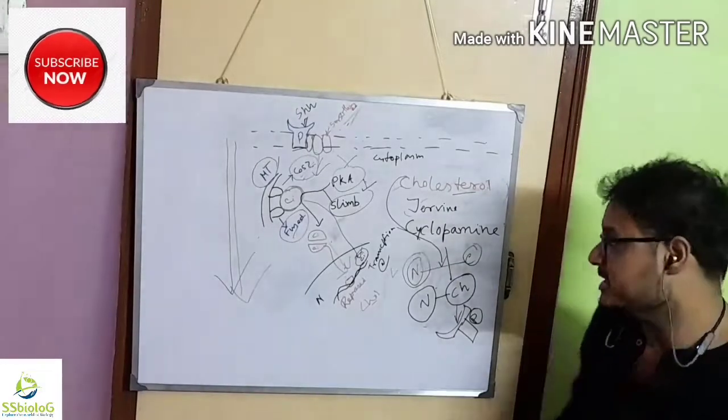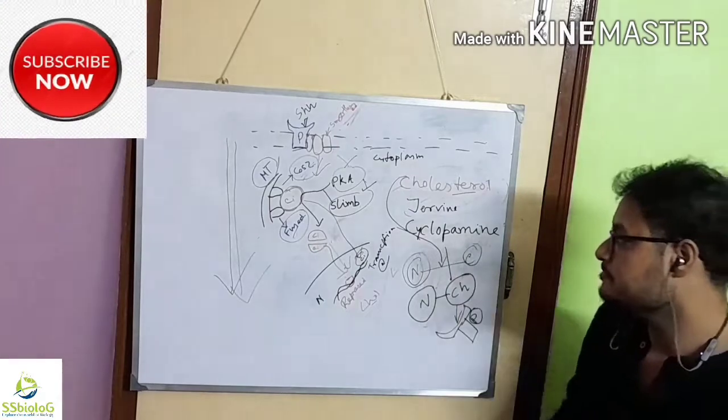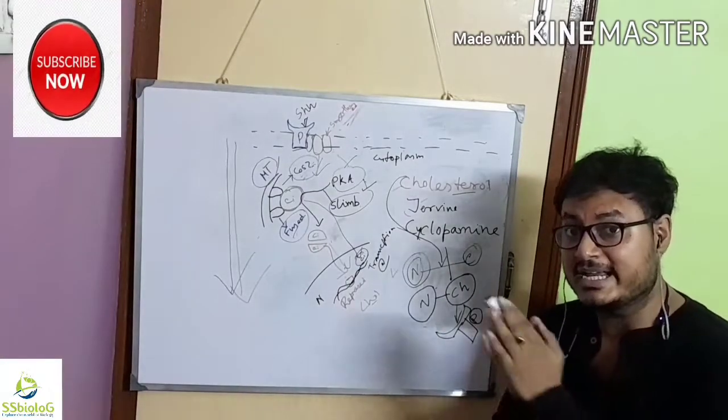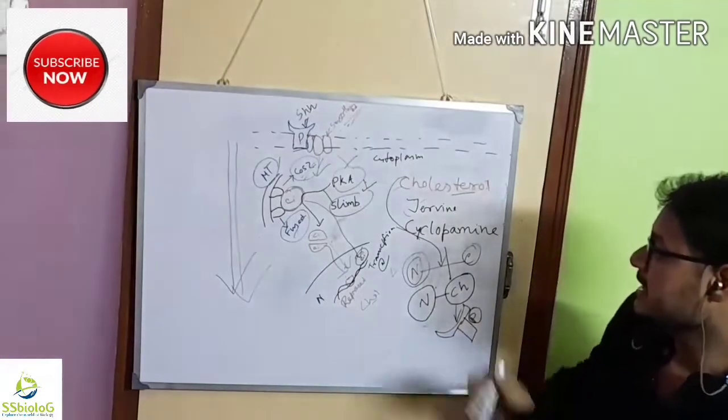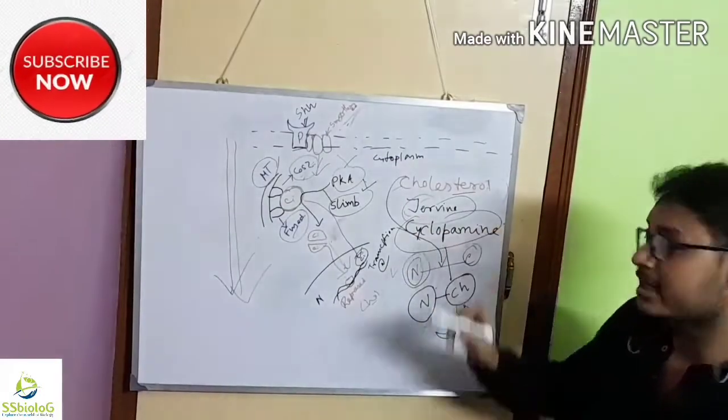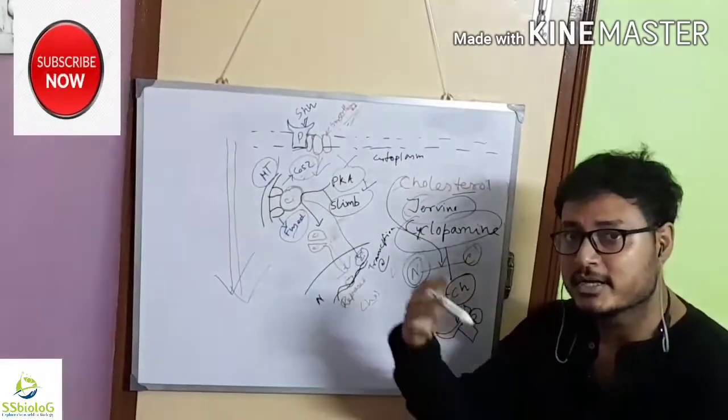These two teratogens, that is jervine and cyclopamine, are responsible for cyclopia in humans. These toxins interfere with the cholesterol biosynthesis. That's why they produce cyclopia.